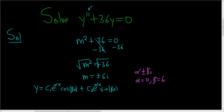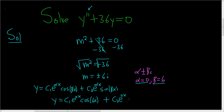Identifying alpha with 0 and beta with 6, we end up with y equals c1 e to the 0x cosine 6x plus c2 e to the 0x sine of 6x.